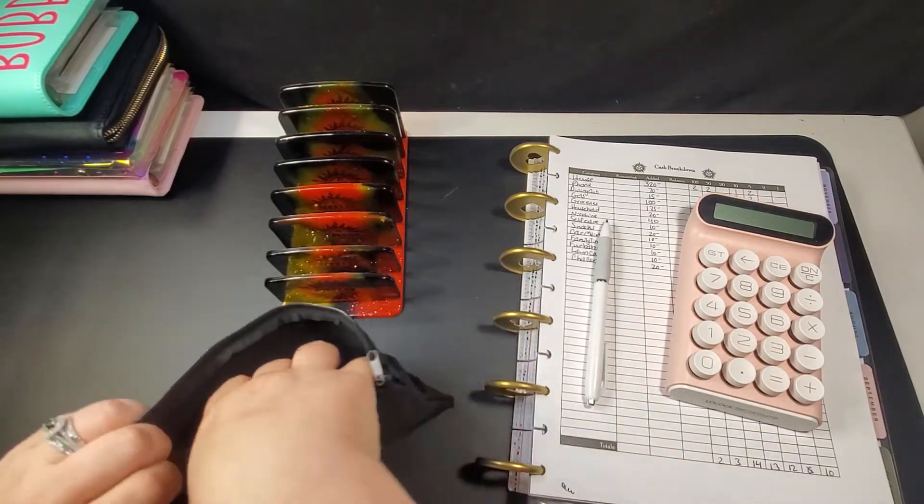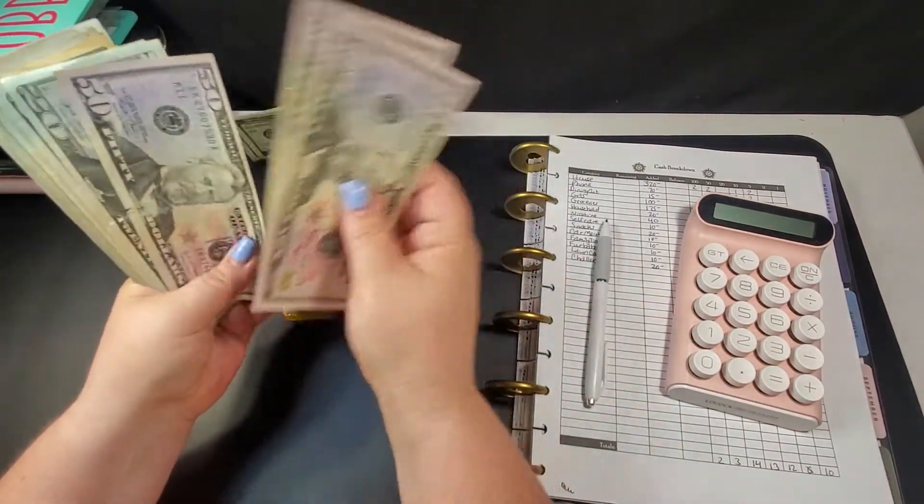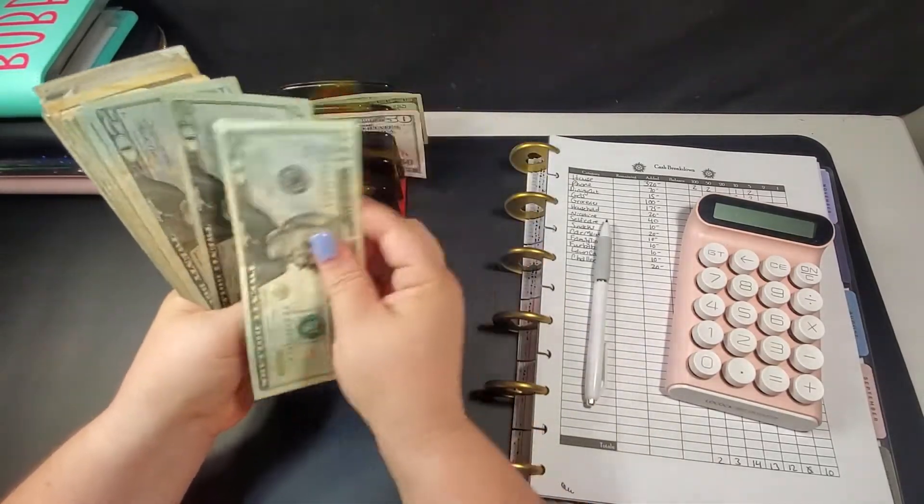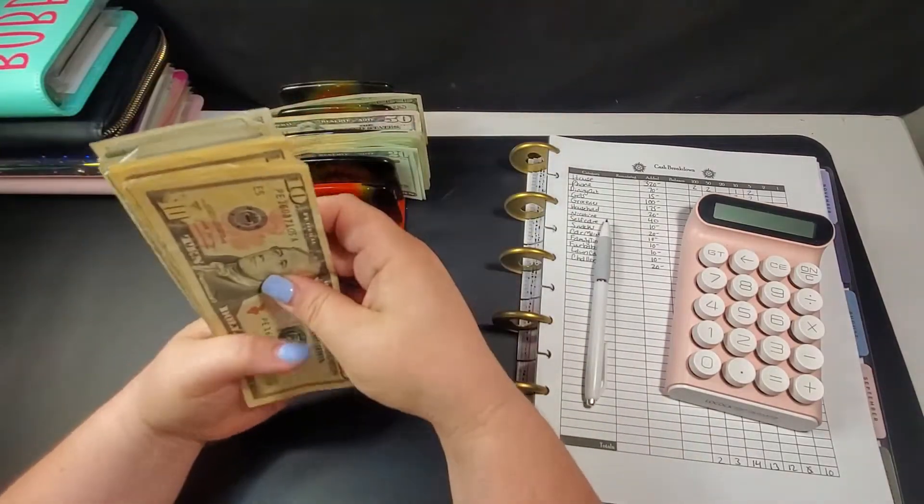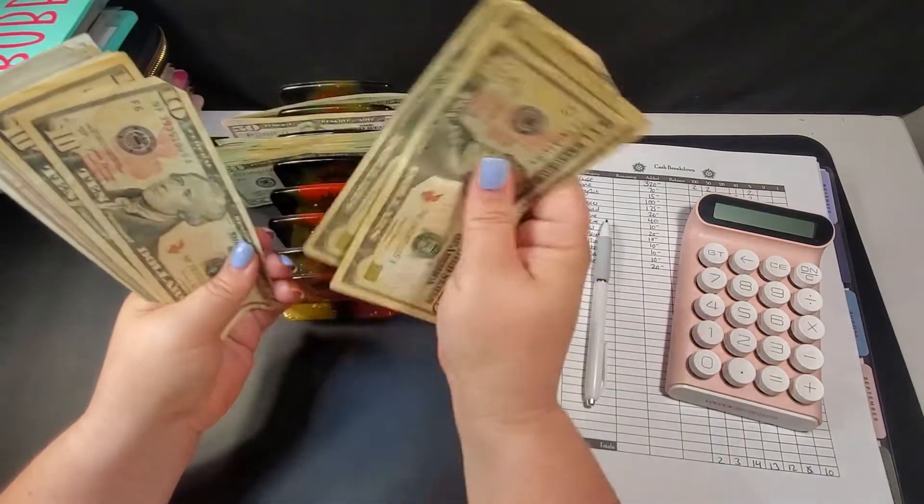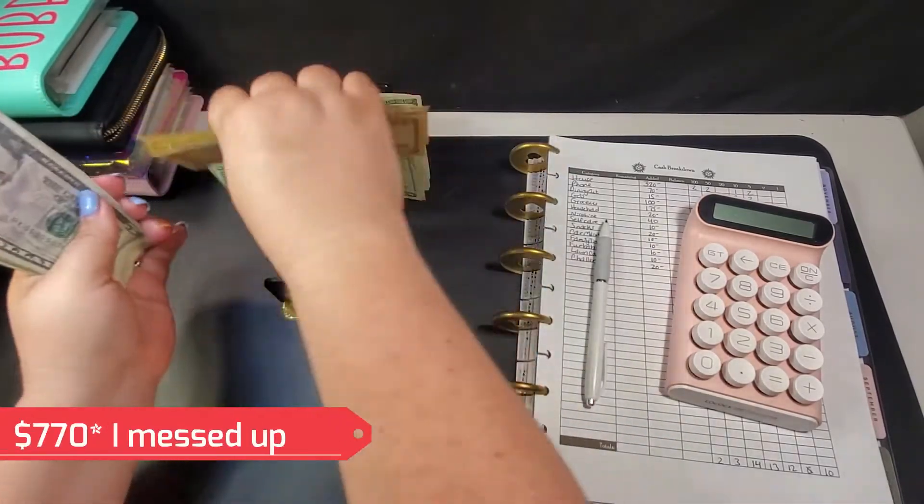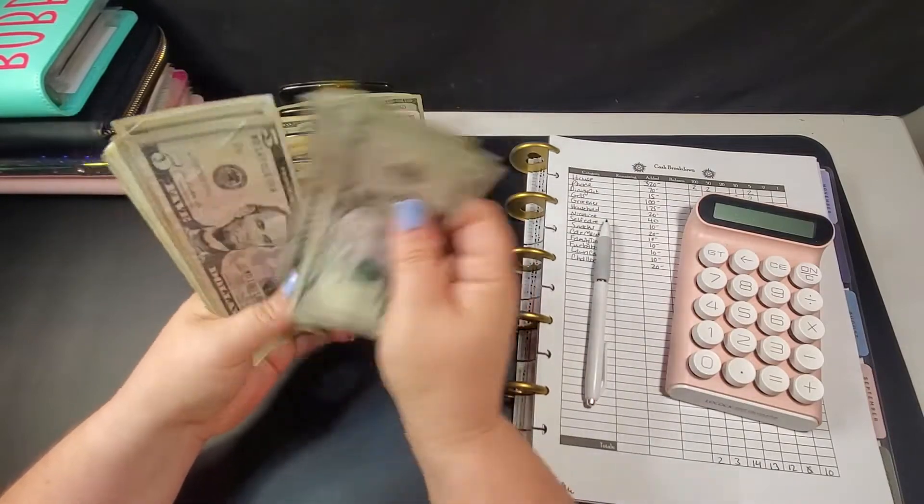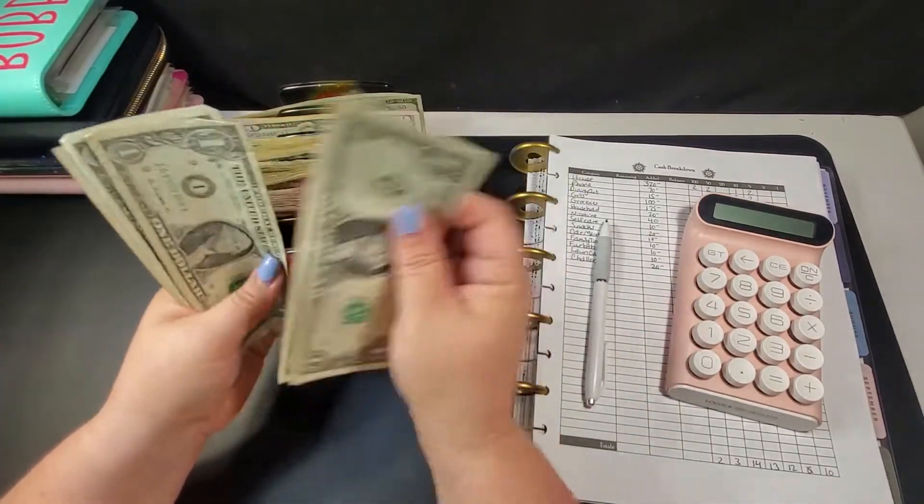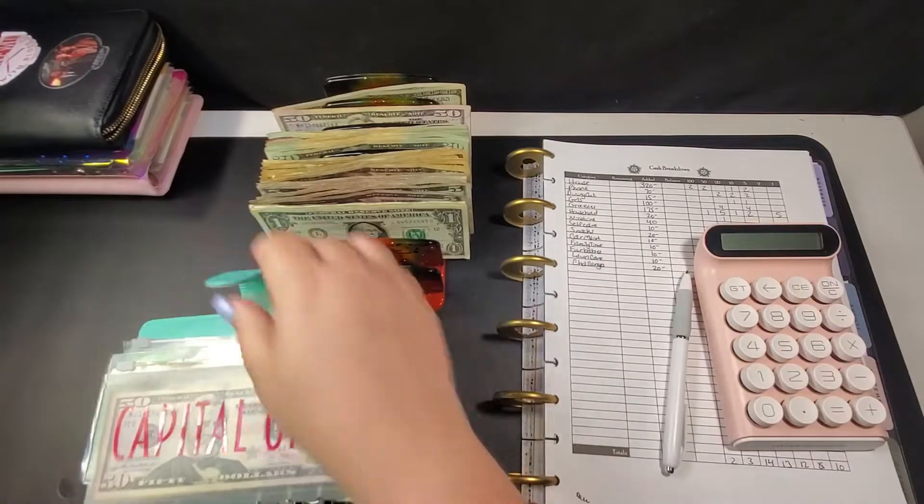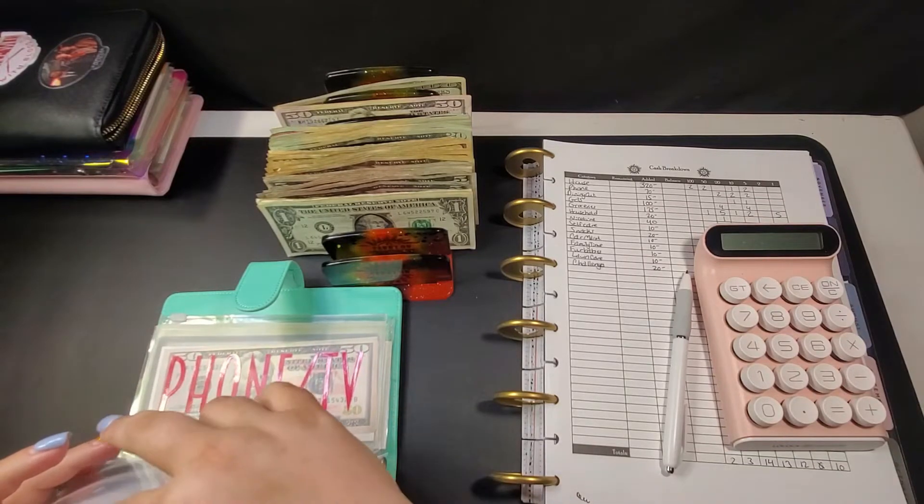So since we are limited, let's get right into it. [Counting cash] We have $765, $770, $775, $800, $805, $830. And I will check my drawer because I may have left it in there, but first we're going to be going into Bobby, which is our bills binder.